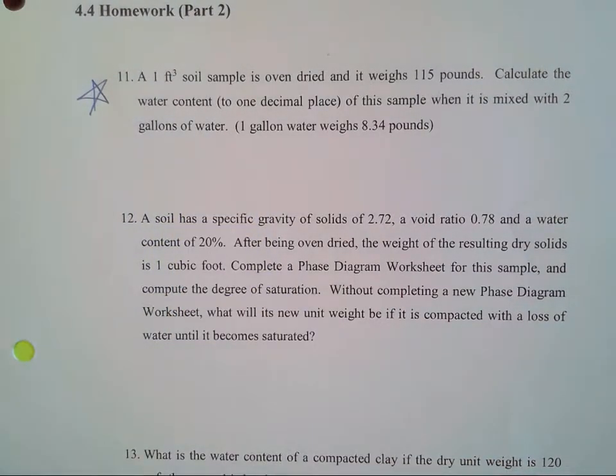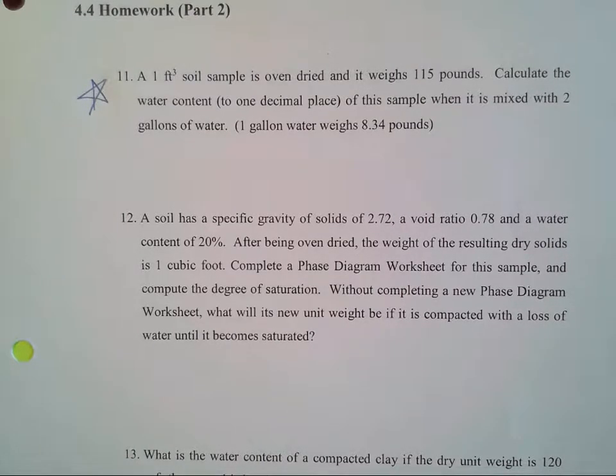A 1 ft³ soil sample is oven-dried and weighs 115 pounds. We want to calculate the water content to one decimal place of this sample when it's mixed with 2 gallons of water. We're told that 1 gallon of water weighs 8.34 pounds.